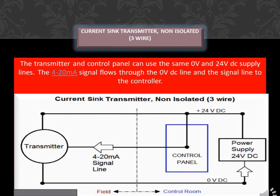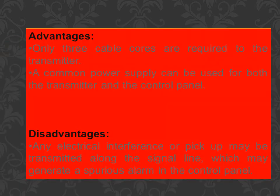Current sink transmitter, non-isolated, 3-wire. The transmitter and control panel can use the same 0V and 24VDC supply lines. The 4-20mA signal flows through the 0VDC line and the signal line to the controller. Advantages: only 3 cable cores are required to the transmitter, and a common power supply can be used for both the transmitter and the control panel. Disadvantages: any electrical interference or pickup may be transmitted along the signal line, which may generate a spurious alarm in the control panel.